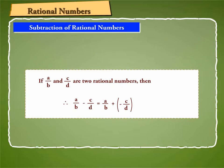Thus, if a by b and c by d are two rational numbers, then a by b minus c by d is equal to a by b plus minus c by d.